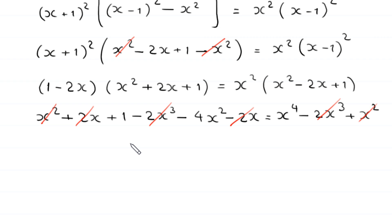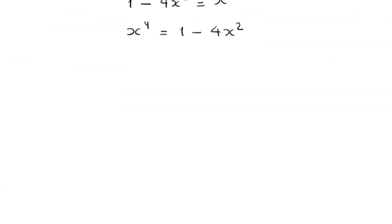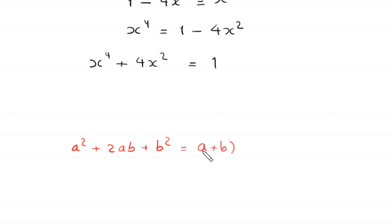So on the left-hand side we are left with 1 - 4x², and on the right-hand side we are left with x⁴. This can be rewritten as x⁴ = 1 - 4x². Moving -4x² to the left gives x⁴ + 4x² = 1. We want to make the left-hand side a perfect square using the identity a² + 2ab + b² = (a + b)².